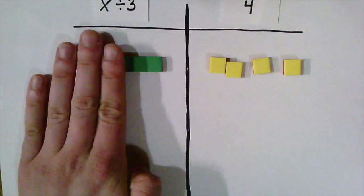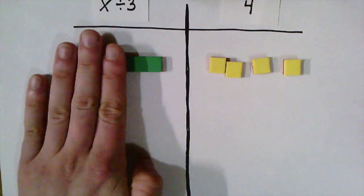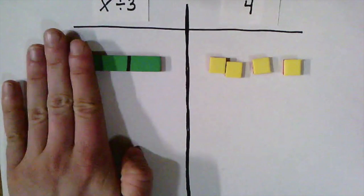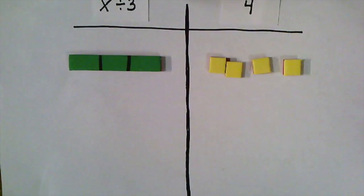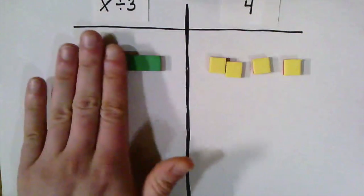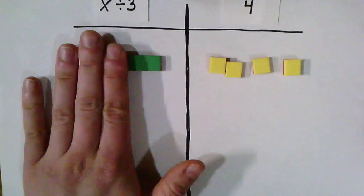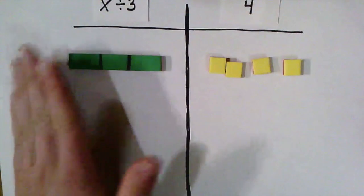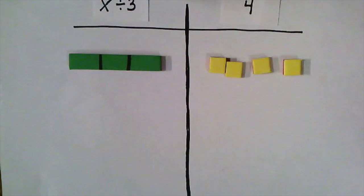So if we want to solve to figure out what the entire value of x is, we can either think about it as adding another third and then adding another third to get a total of 3 thirds or one whole. Or we can think about taking 1 of the thirds and multiplying by 3 again to get a whole. Either way that you think about it, we need to do the same thing to the other side.